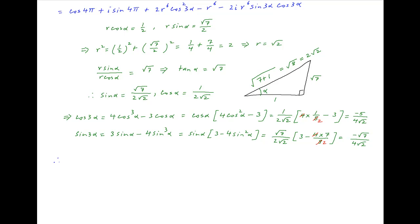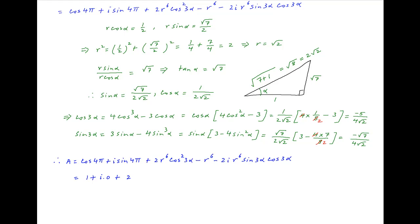Using these results, the value of a equals cos of 4pi plus i times sin of 4pi plus 2 times r raised to the power 6 times cos squared 3 alpha minus r raised to the power 6 minus 2i times r raised to the power 6 times sin 3 alpha cos 3 alpha, which equals 1 plus i times 0 plus 2 times root 2 raised to the power 6 times minus 5 upon 4 root 2 squared.